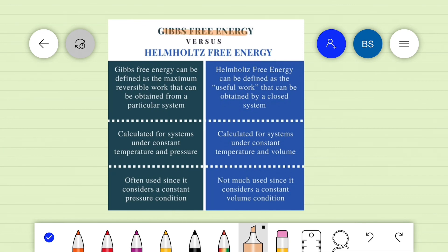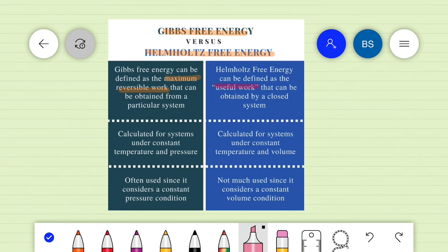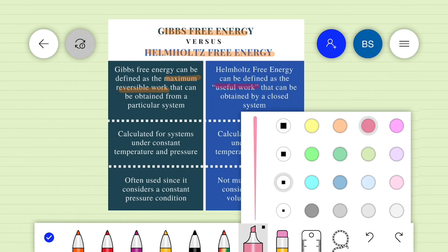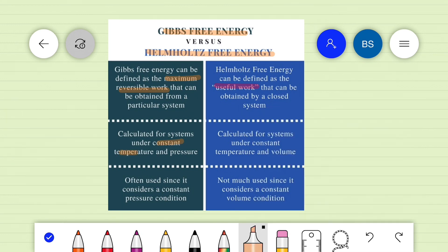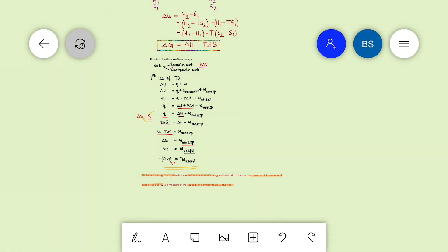Comparing Gibbs and Helmholtz free energies: Gibbs free energy is defined as the maximum reversible work, whereas Helmholtz free energy is the useful work. Gibbs free energy applies to systems under constant temperature and pressure, while Helmholtz free energy applies at constant temperature and volume. Gibbs free energy has many more applications since constant pressure is common, while Helmholtz free energy's applications are more limited. In the coming session, we will discuss the Gibbs energy criteria for spontaneity.